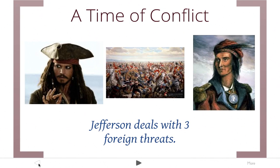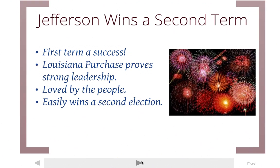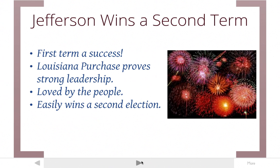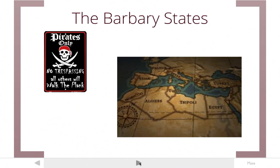Today's video is called A Time of Conflict, and we're going to be talking about Jefferson dealing with three foreign threats: pirates, war, and Native Americans. Jefferson's first term was very successful with the Louisiana Purchase. He wins a second term in 1804, having provided strong leadership and being loved by the people. His second election goes much easier than the first against John Adams. However, in his second term in office, he's going to face some major foreign problems that will prove more difficult than what he's faced already.